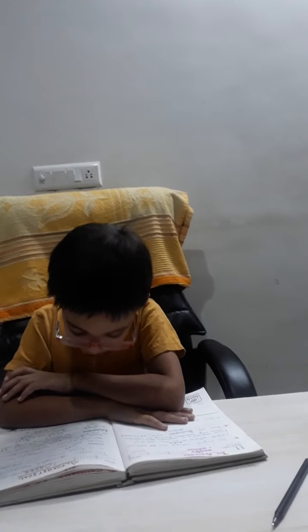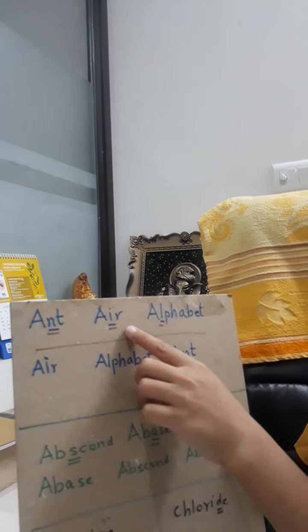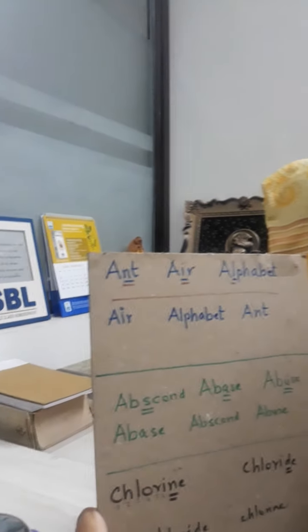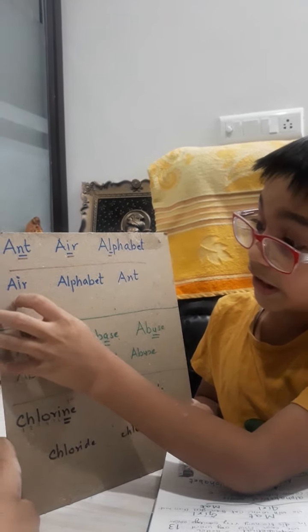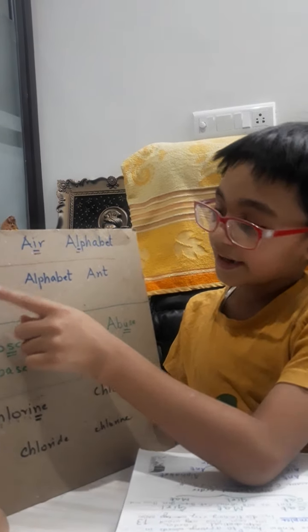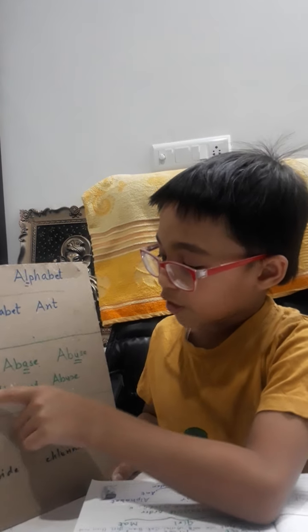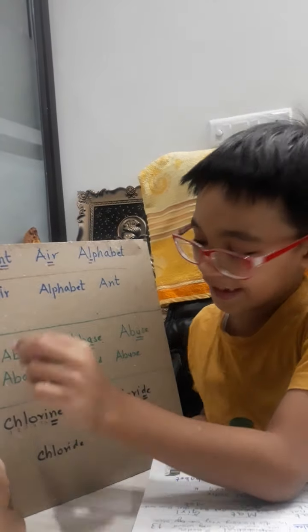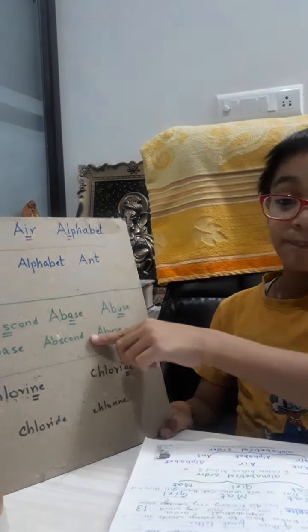Second example: ant, air, alphabet. Here the first letter is the same. When the first letter is the same, we look at the second letter. If we have a third letter to compare, then the order will be: abase, abscond, abuse.